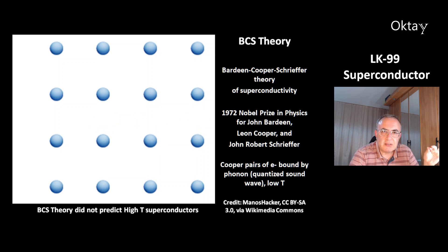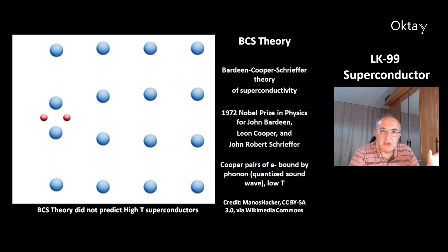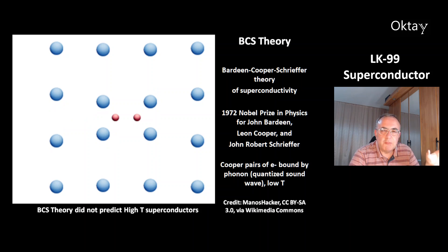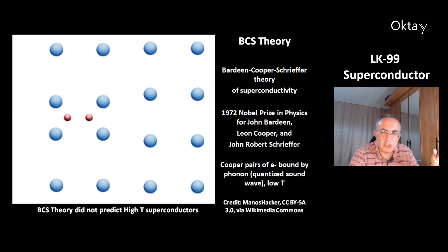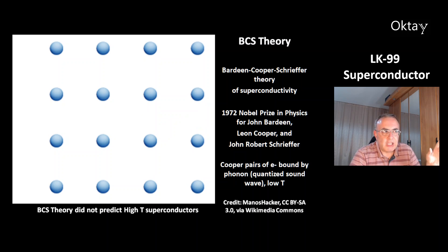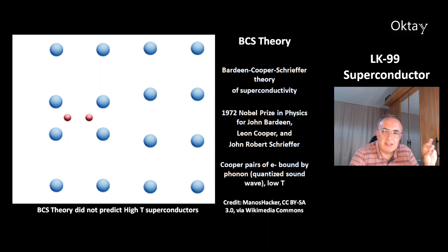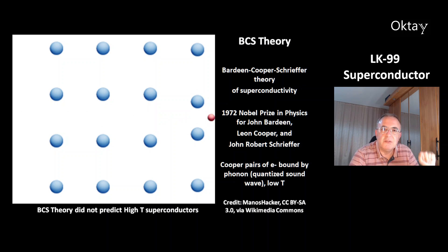Superconductivity is a phenomenon at low temperatures. This Cooper pair of electrons can travel through the structure without loss of energy. However, the BCS theory did not predict the high-temperature superconductors, and this phenomenon is still not 100% understood.